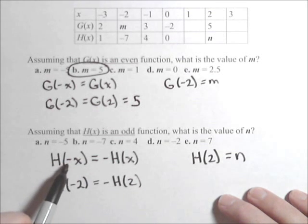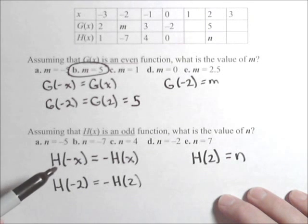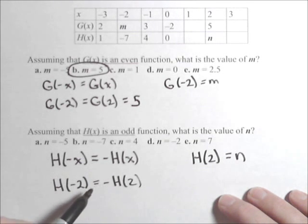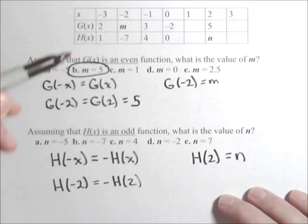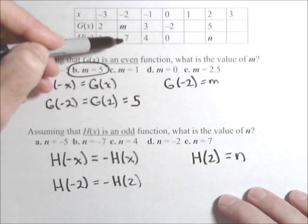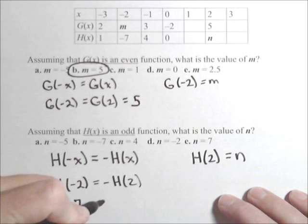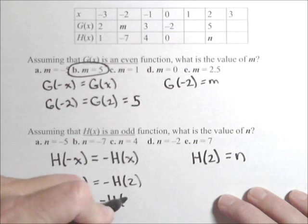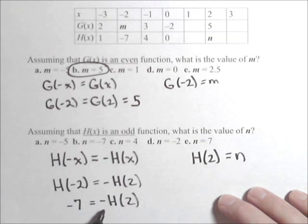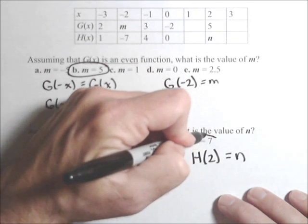This is by our definition. Now, let's see what we know in here. It's h of two that we're looking for. H of negative two, we do have, because h of negative two is negative seven. So, negative seven equals negative h of two. All right, so we're almost there. The only thing we can do is multiply both sides by a negative one, so h of two equals a positive seven.